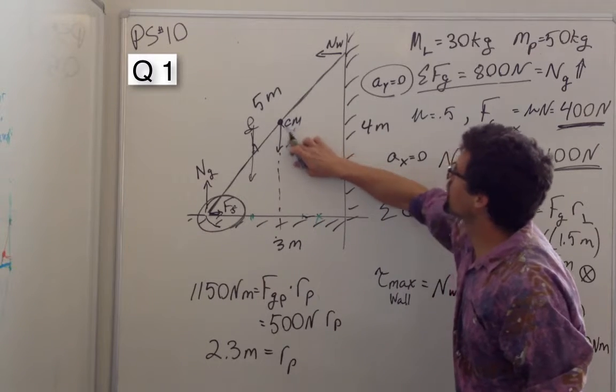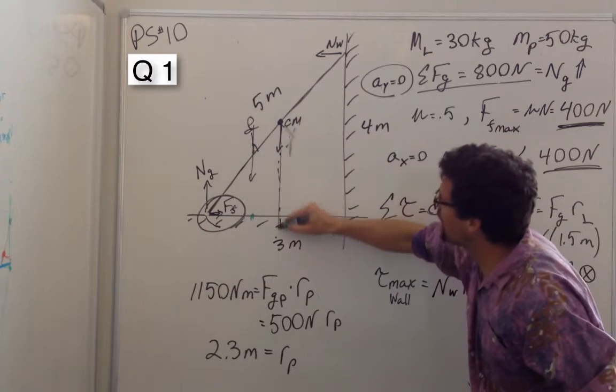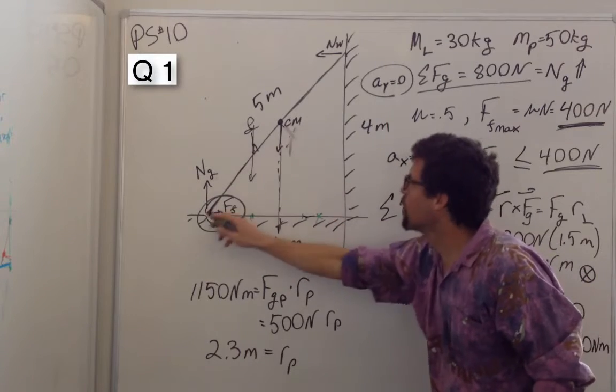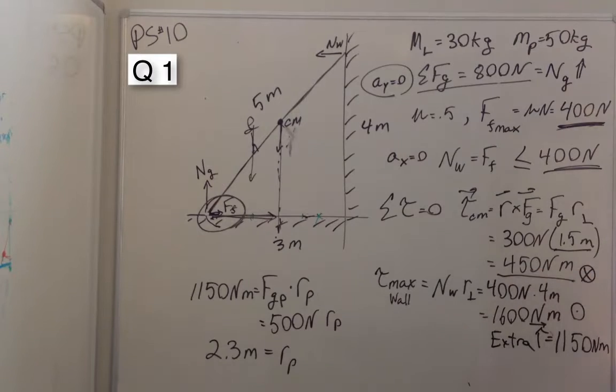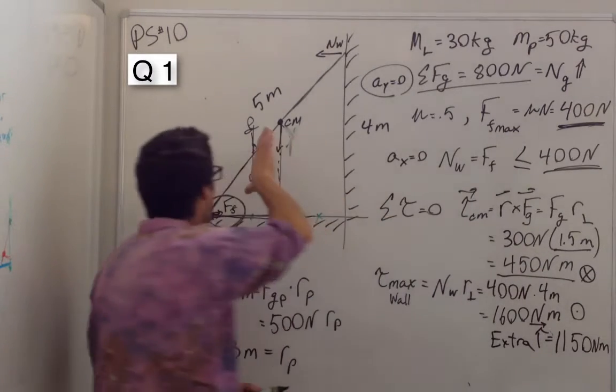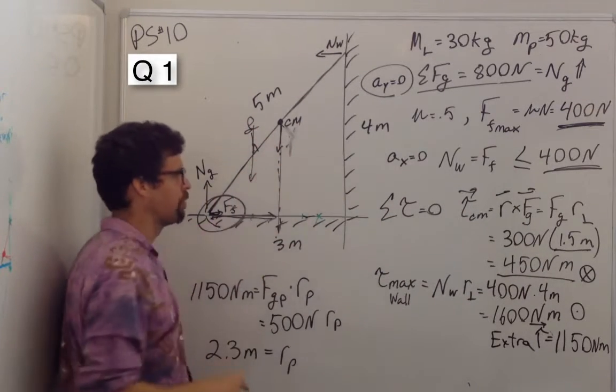But I find it easier just to make it equal to the force of gravity times the perpendicular component of the radius which is 1.5 meters. So we have 450 newton meters of torque trying to turn the ladder this way.